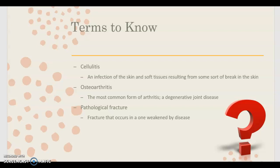Next is osteoarthritis. If you ever see the abbreviation OA, that's for osteoarthritis. This is a type of degenerative joint disease and it's the most common form of arthritis. And then finally, a pathological fracture — a pathological fracture is a fracture that occurs in a weakened bone due to an underlying disease. So the bone is already weak from that underlying disease.